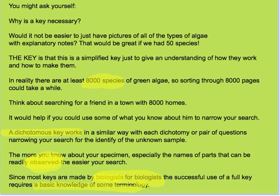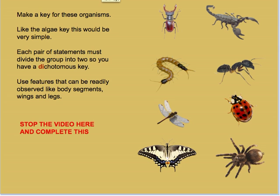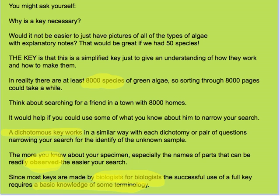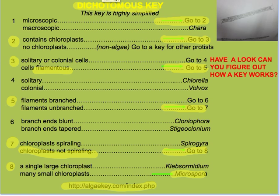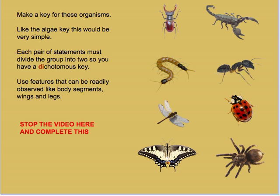There's no point talking about things that are really complicated and hard to see — we want to quickly identify what we're looking at. So let's stop here and have a look at your activity. Your activity requires you to make a key for eight organisms that you are hopefully very familiar with: beetle, scorpion, centipede, ant, dragonfly, ladybug, spider, and butterfly. Look back at our sample key, look at how it's made up with pairs of statements, and try to organize these eight specimens in a key of your own. A hint is to look for features like body segments, wings, and legs — things that are easy to observe and useful in separating members of this group.